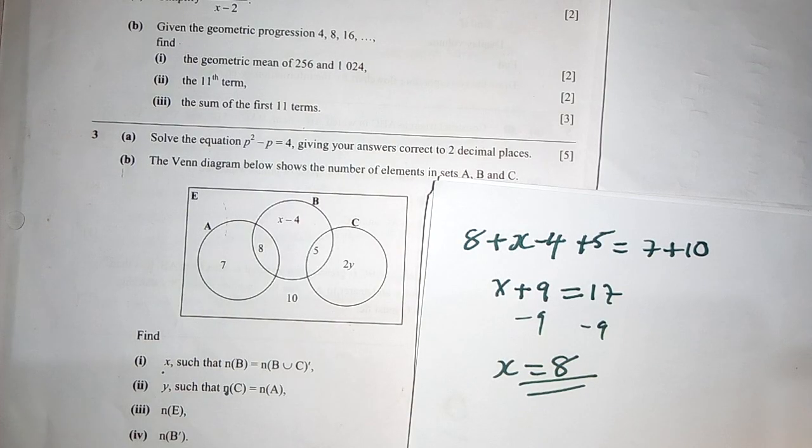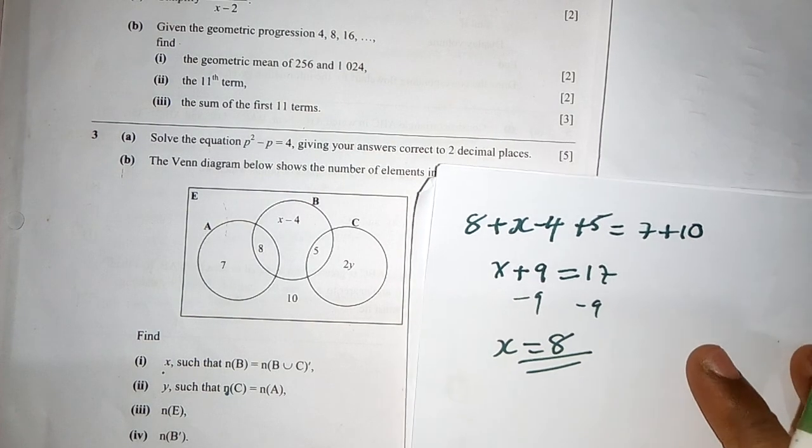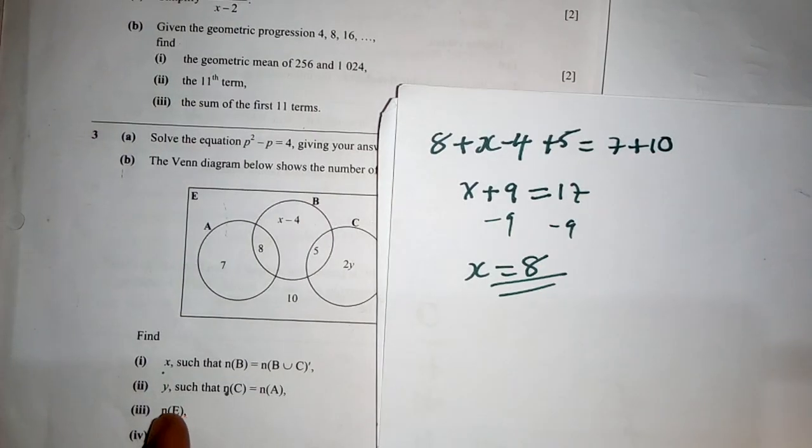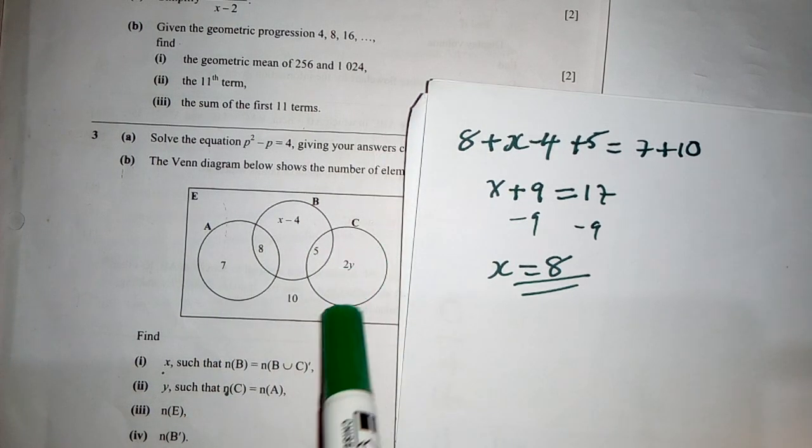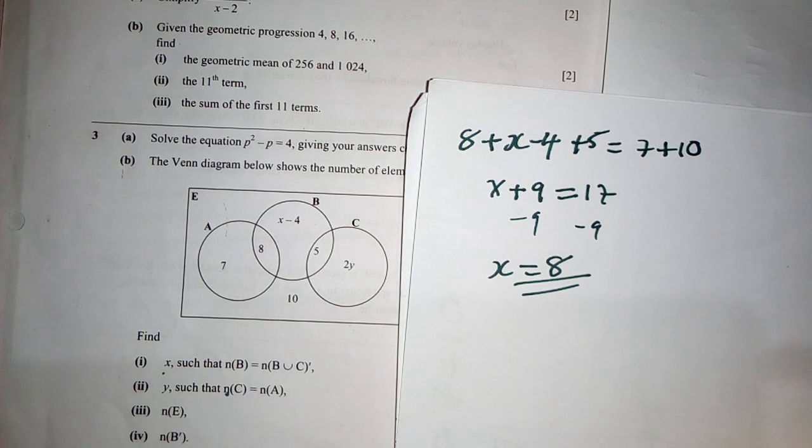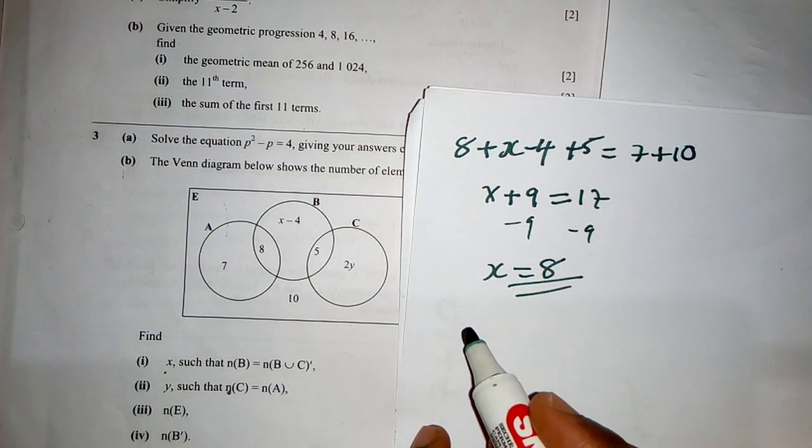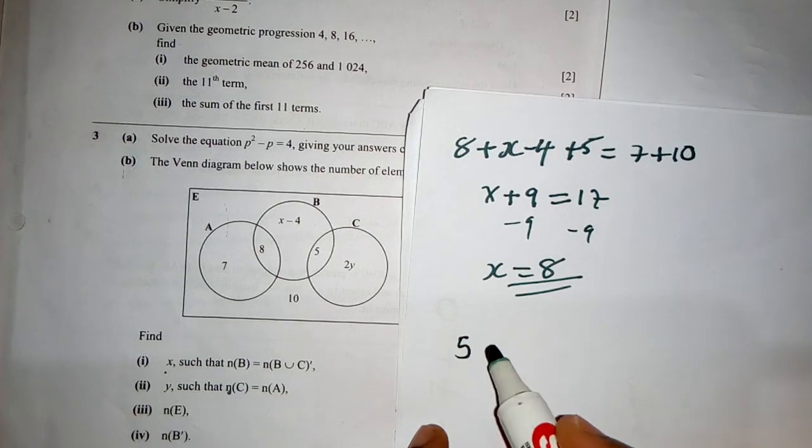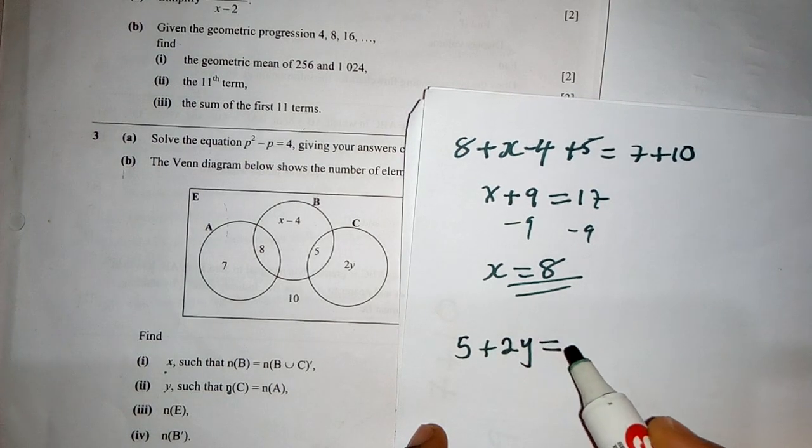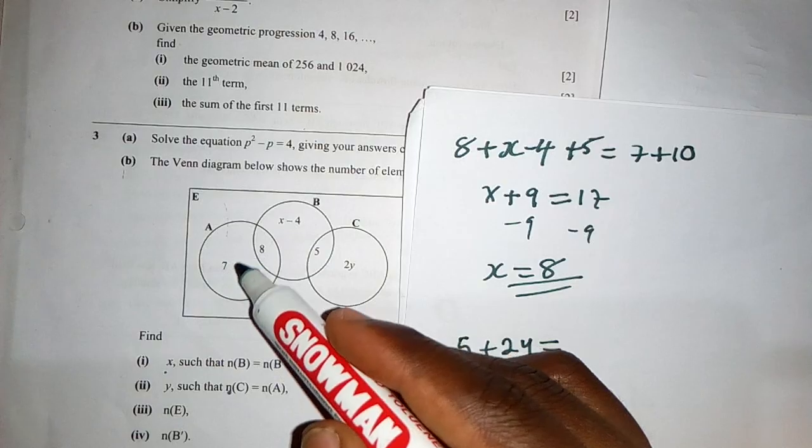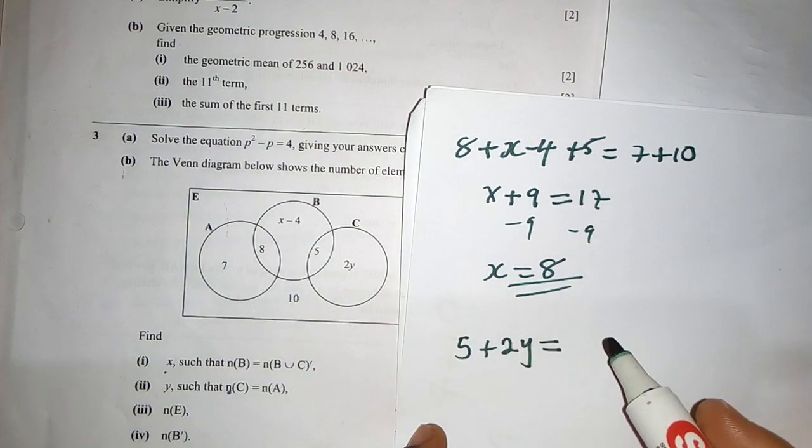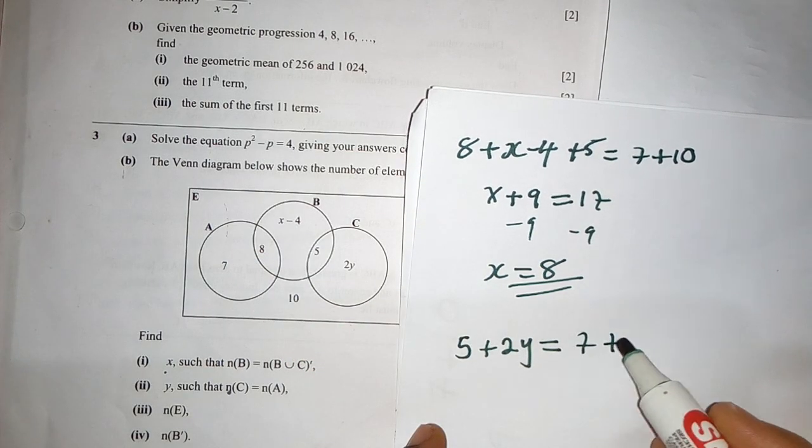And then the second question says find the value of y such that number of elements in C, C over here, are equal to the number of elements in A. So we list the number of elements in C: we have 5 plus y is equal to, we also add the number of elements in A, we have 7 plus 8.